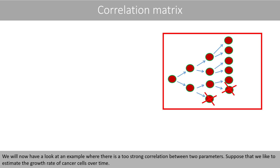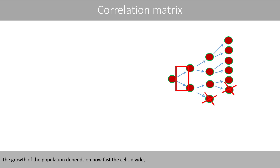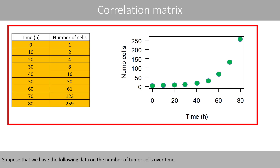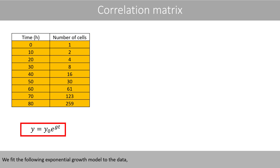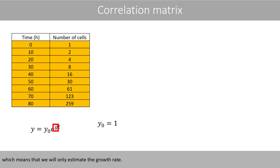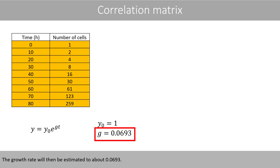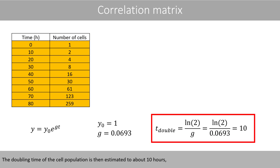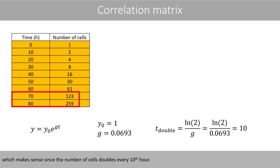We'll now have a look at an example where there is a too-strong correlation between two parameters. Suppose that we like to estimate the growth rate of cancer cells over time. The growth of the population depends on how fast the cells divide and how fast they die. Suppose that we have the following data on the number of tumor cells over time. We fit the following exponential growth model to the data, where we fix the value of Y0 to 1, which means that we will only estimate the growth rate. The growth rate would then be estimated to about 0.0693.